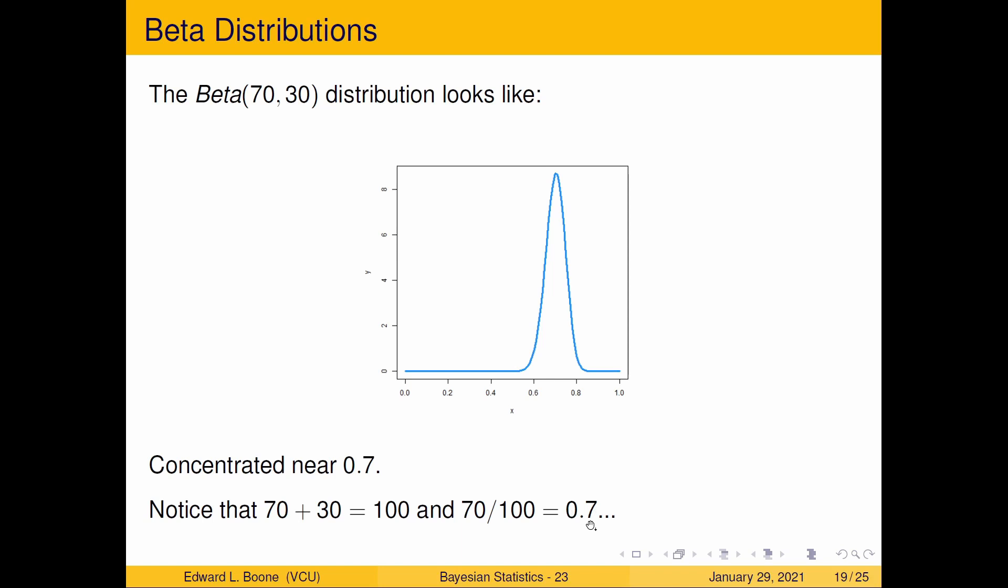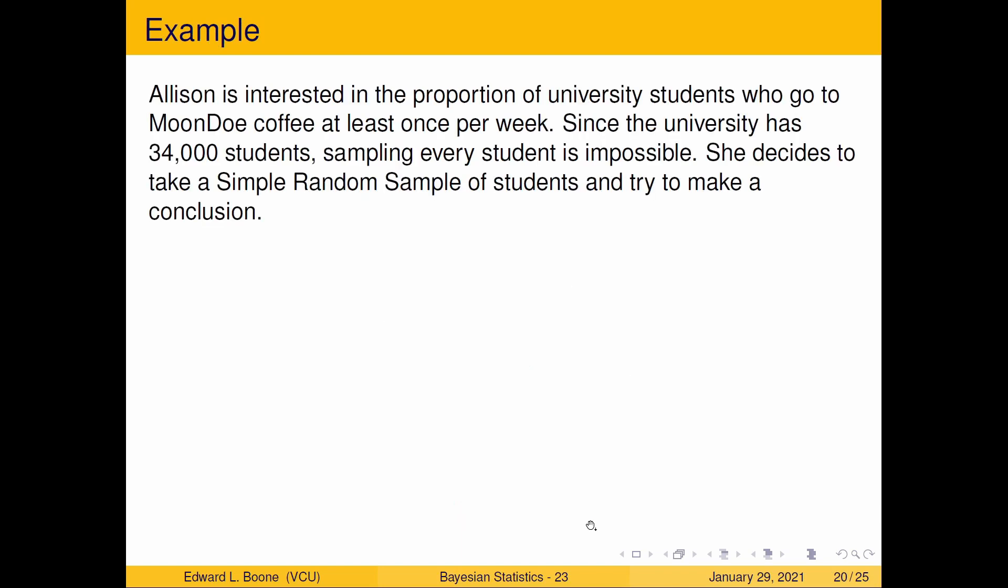We're going to go back to our example. Allison is interested in the proportion of university students who go to MoonDoe coffee at least once per week. Since the university has 34,000 students, sampling every student is impossible. She decides to take a simple random sample of students and try to make a conclusion.